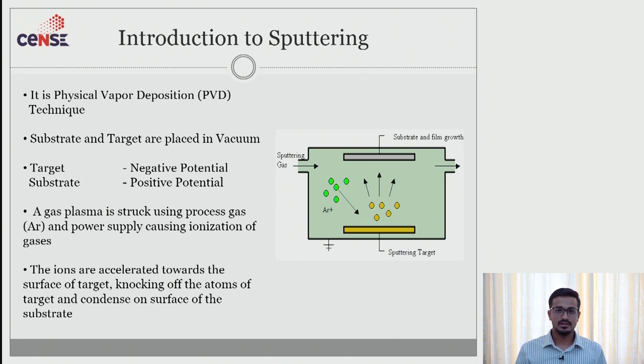During this stage we will be introducing two different electrodes which is made as positive and negative. In negative potential we house a target material and in positive potential we house a substrate. Also we purge in a gas during this moment and we provide a high potential difference across these two electrodes which will cause ionization in our working gas. Here our working gas is argon.